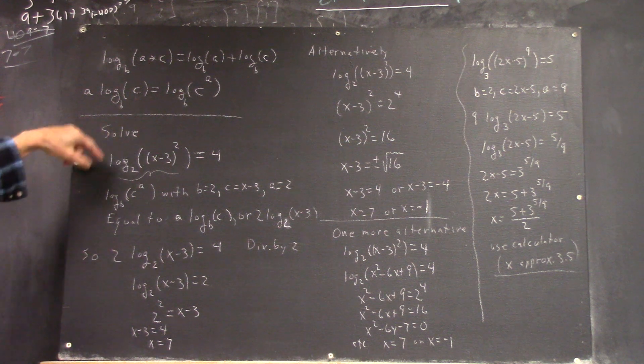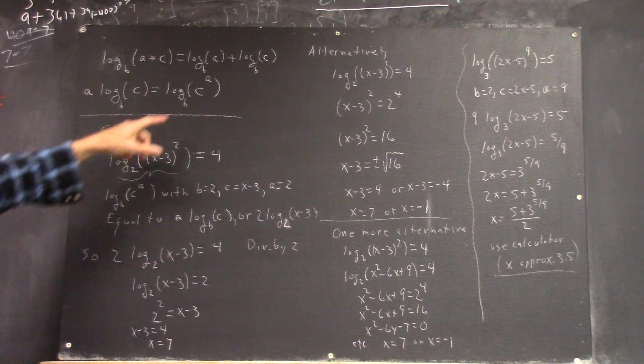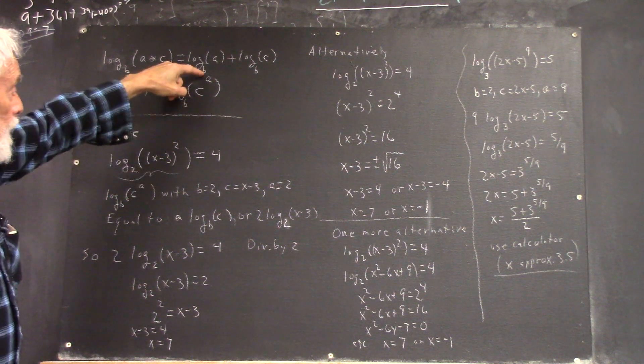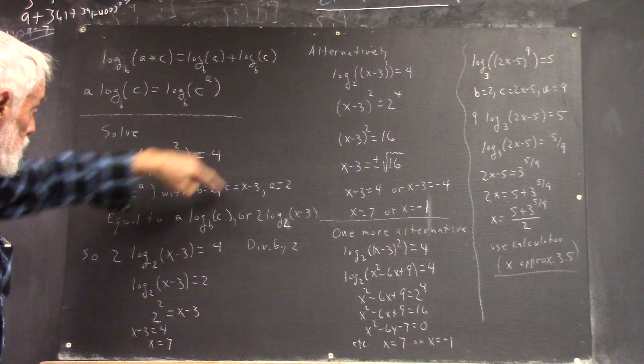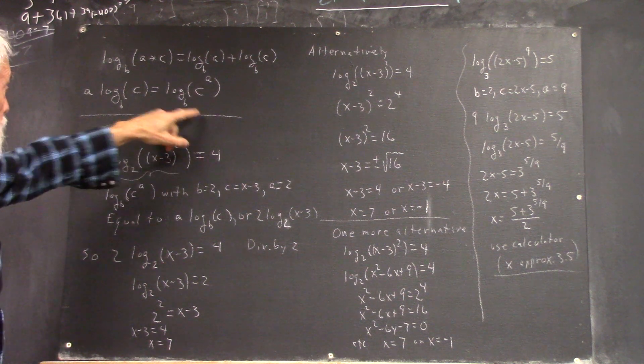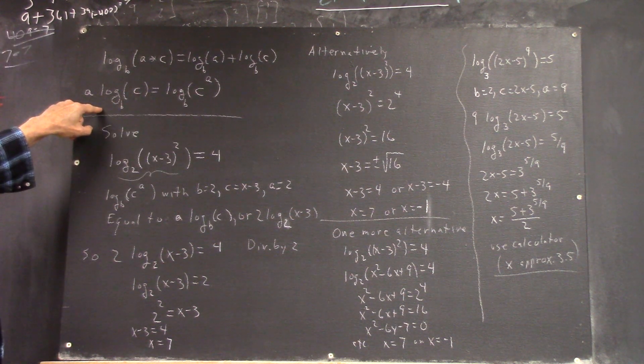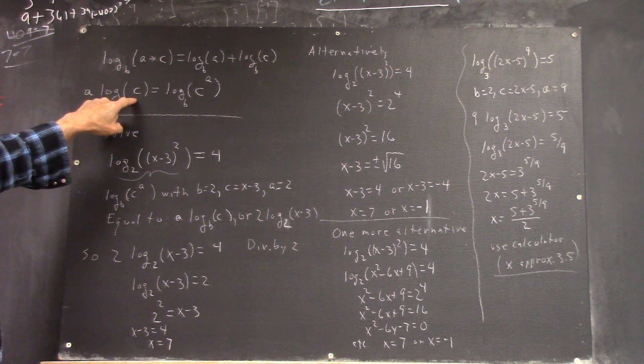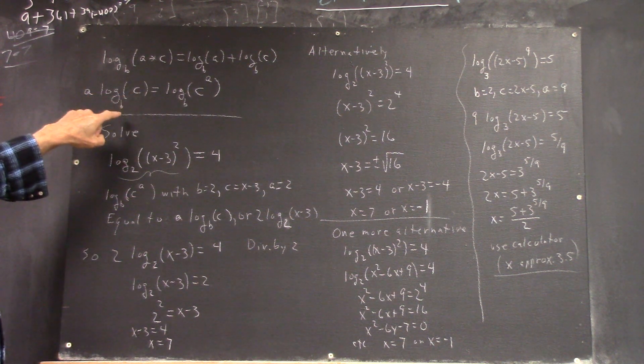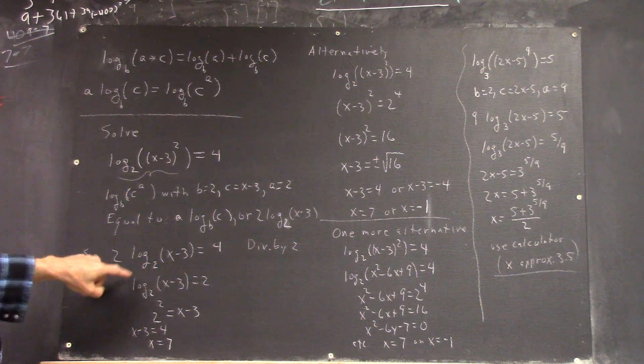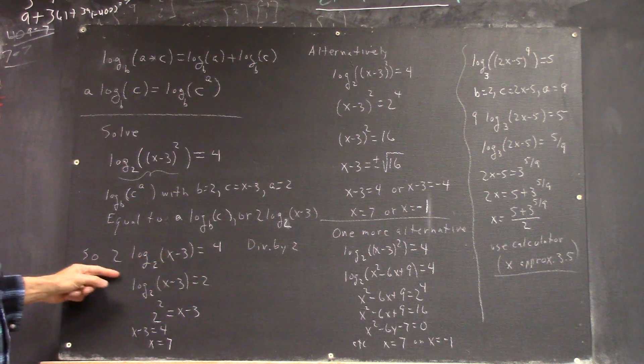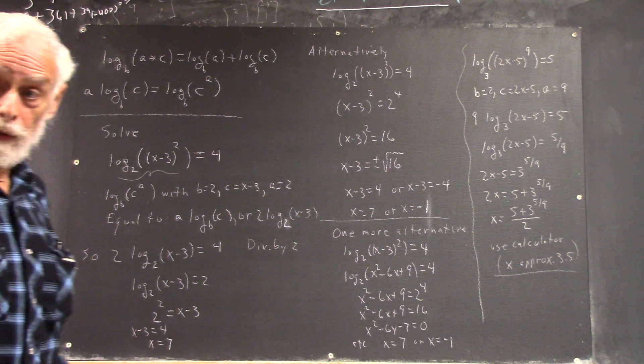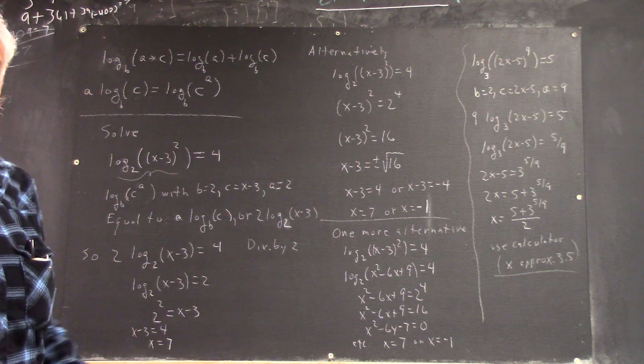Applying that to this equation, we can easily identify that B is 2, C is X minus 3, and A is 2. So we have that, and that's got to be equal to this expression. So we get A is 2, C is X minus 3, and B is 2. Right there is the expression. And then we solve this in the way we already know how. We already know that, or I hope we do.